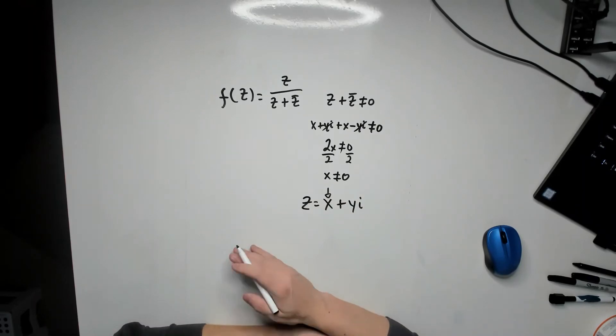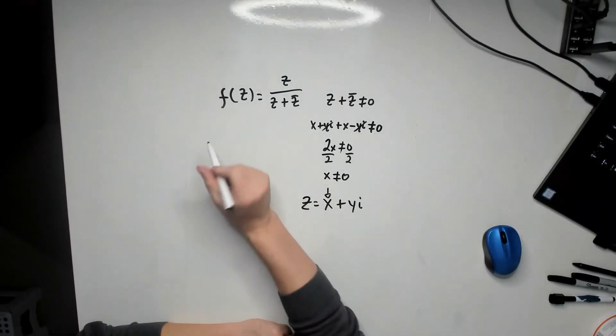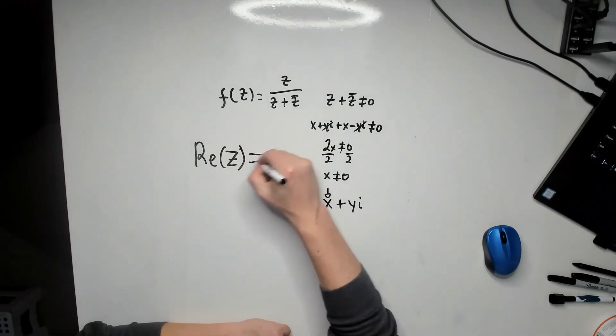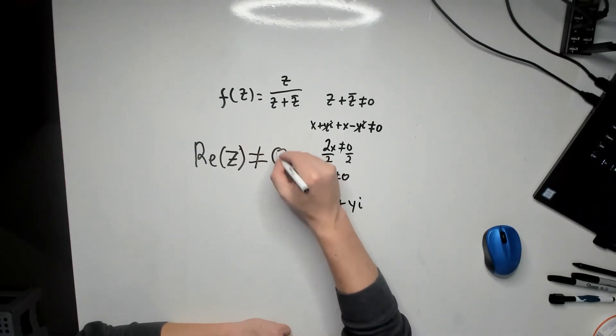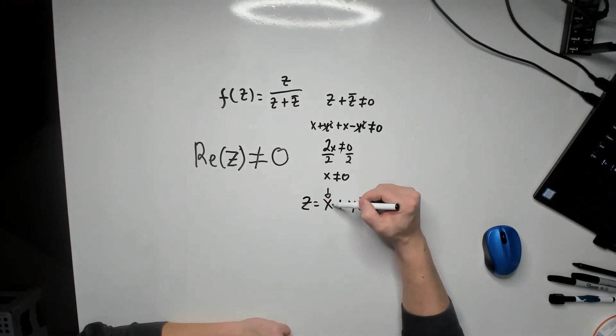So a way to talk about this is to say that this function is defined as long as the following is true: that the real part of the number z is not equal to 0, because the real part of the number z is like saying x does not equal to 0, since x is the real part.